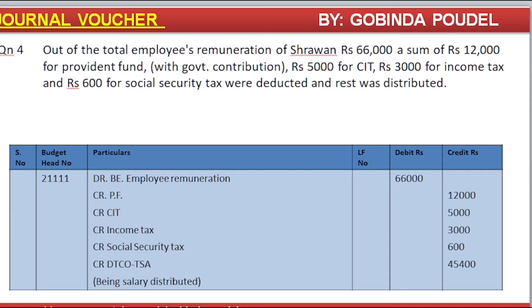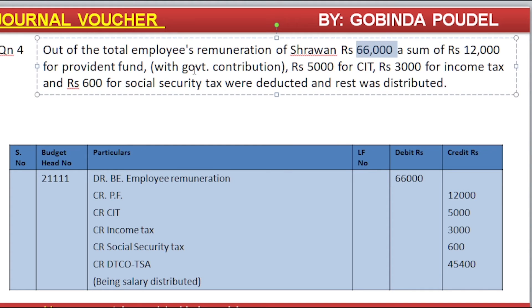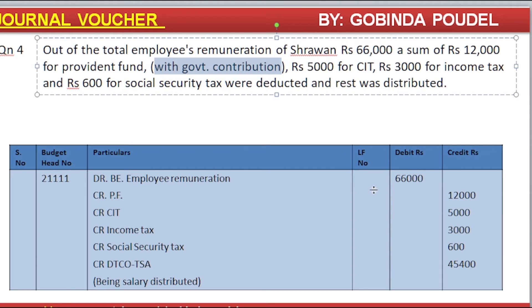Third question: Out of the total employer remuneration of Rs. 66,000, it costs Rs. 7,000 per Provident Fund with government contributions, Rs. 5,000 per CIT, Rs. 3,000 per Income Tax, and Rs. 600 per Social Security Act deducted, and the rest was distributed. The total salary is Rs. 60,000, and the government contribution is Rs. 6,000 at 10%, totalling Rs. 66,000.